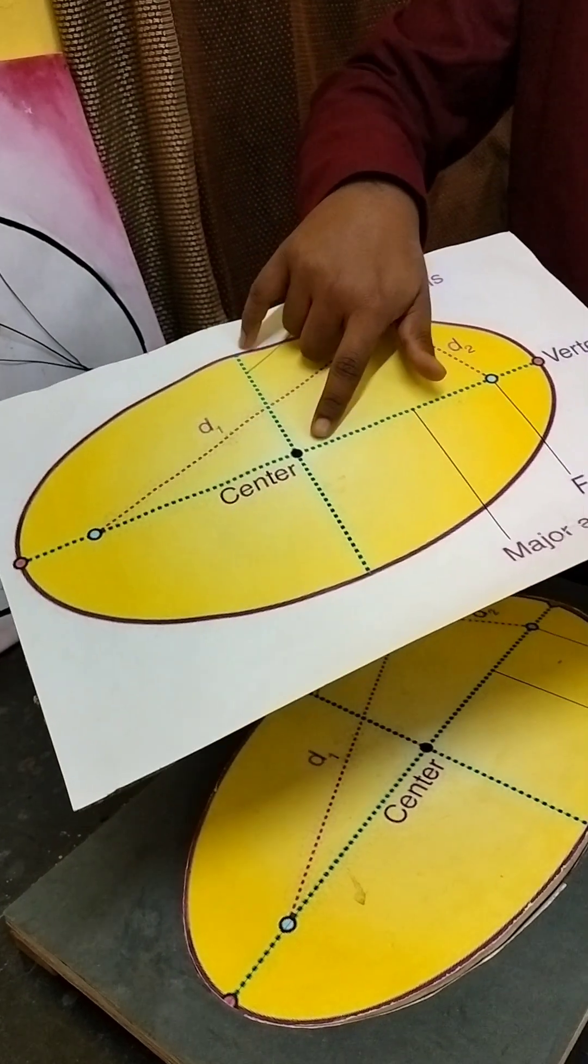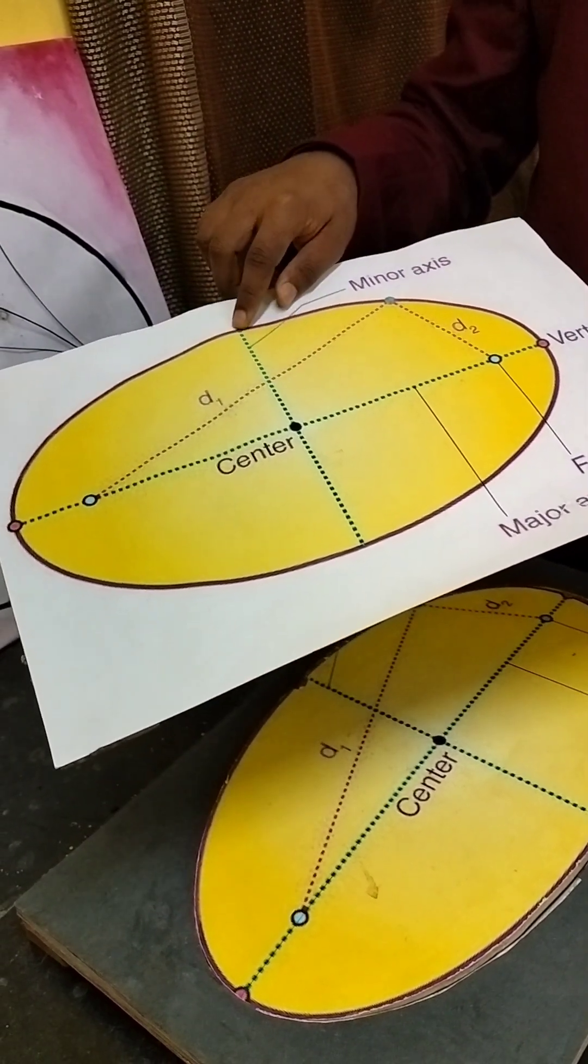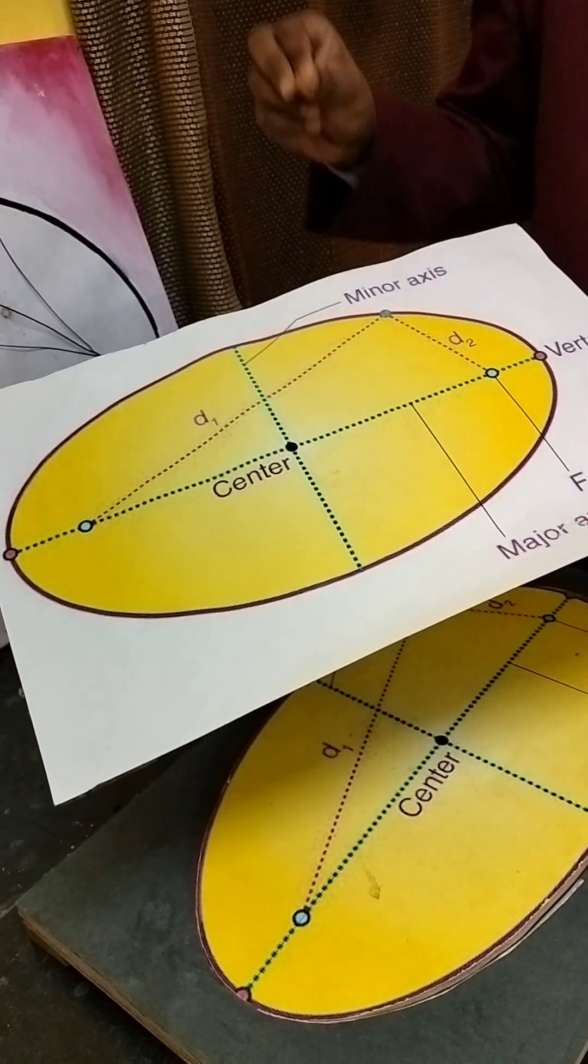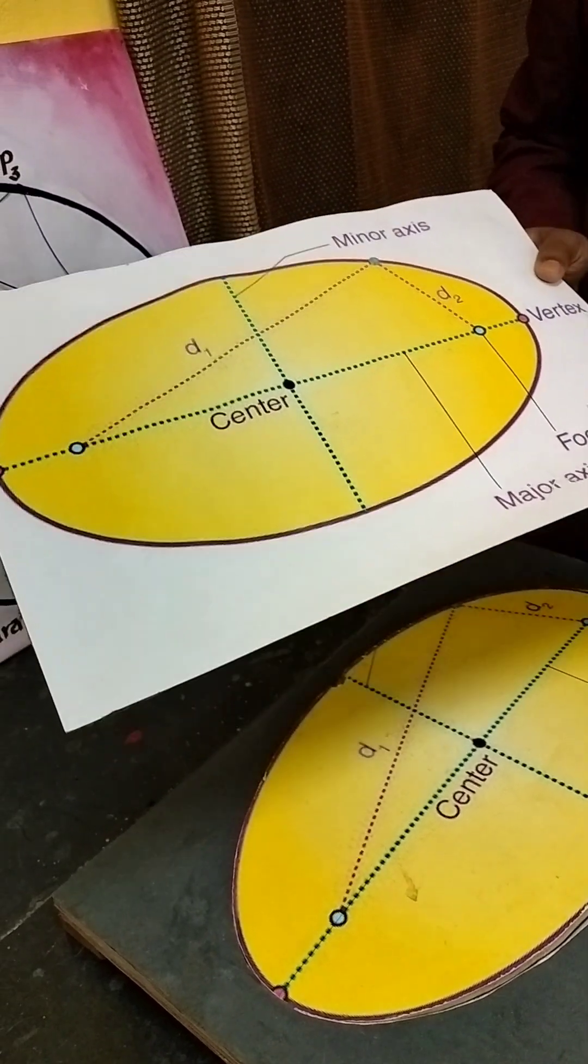Similarly, half length of the minor axis is termed as B. So the coordinate here becomes (0, B) and the coordinate here becomes (0, -B). The length of major axis is therefore 2A and length of minor axis is therefore 2B.